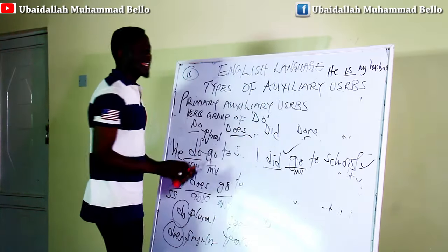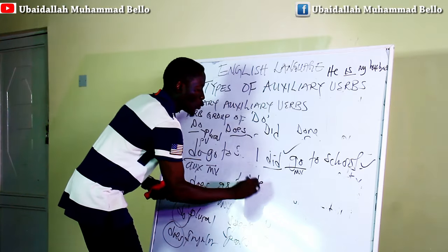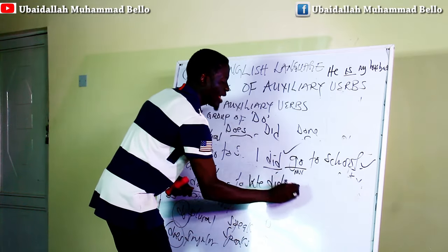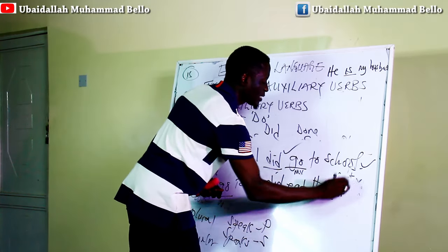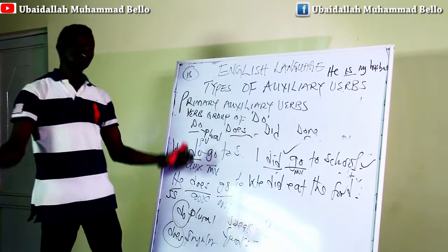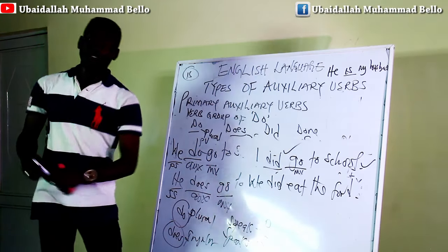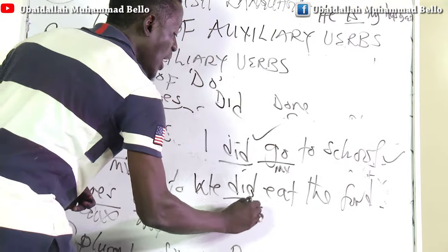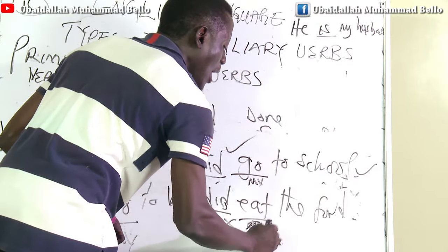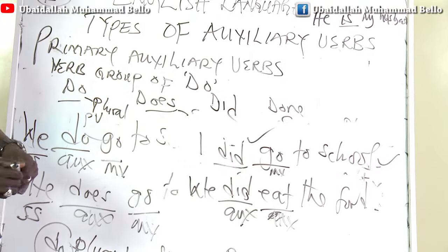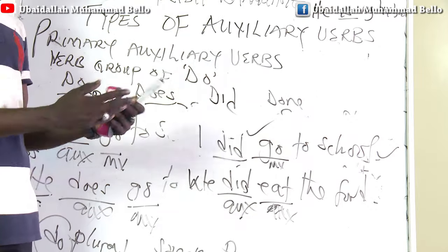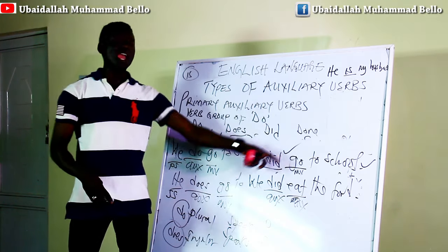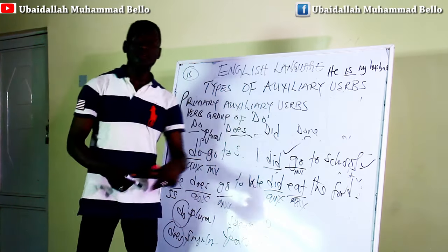Another example: 'We did eat the food.' Somebody may have asked, 'Did you eat the food?' You say, 'Yes, we did eat the food.' 'Did' here is our auxiliary while 'eat' is our main verb. You can see how they function as auxiliary verbs, giving grammatical assistance to the main verb.